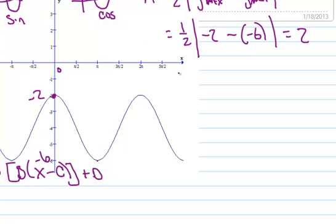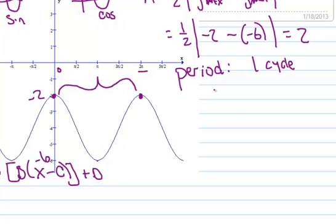Now let's calculate B. In order to calculate B, I need to know the period. I'm going to look at how much distance is between my two maximum points. I have a maximum at zero and a maximum at 2 pi, and we know that that is one cycle, so it looks like my period is 2 pi.